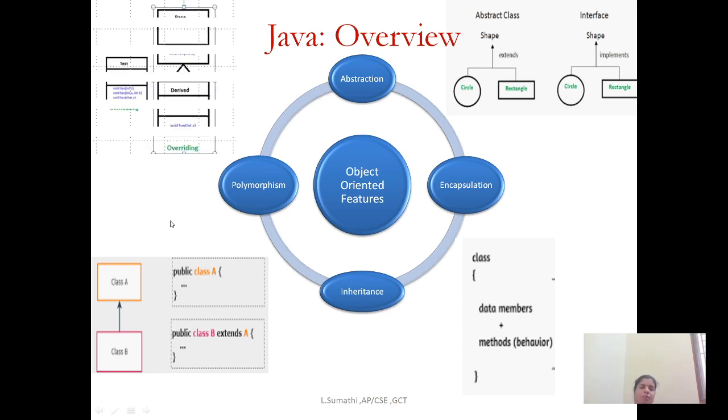And what is polymorphism? Taking more than one form. Yourself will be taking multiple forms as a child, as a student, as a friend. In the same way, your methods or class taking more than one form is called polymorphism.